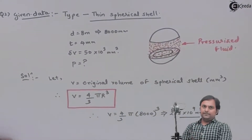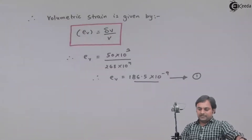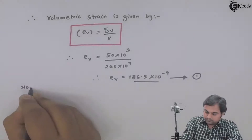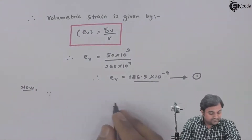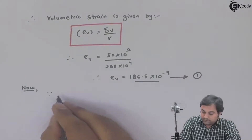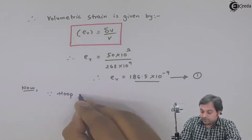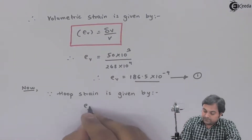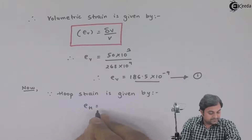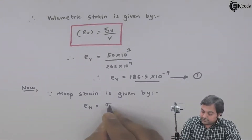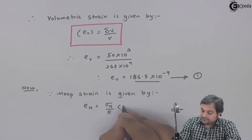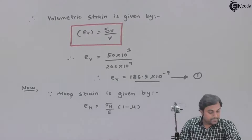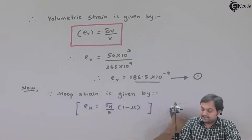Since circumferential strain — also called hoop strain, as both are the same — is given by hoop stress divided by Young's modulus, multiplied by the bracket (1 − μ). I will keep this as Equation 2 and first go find the hoop stress.